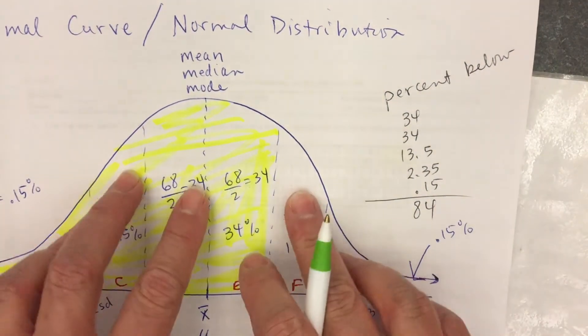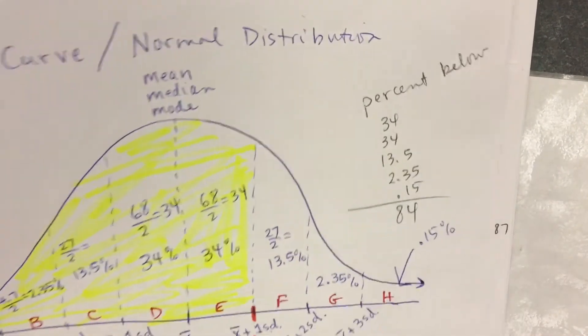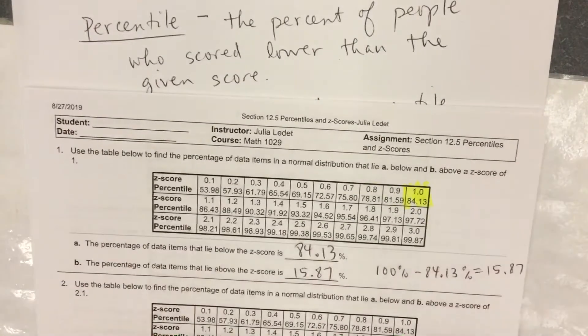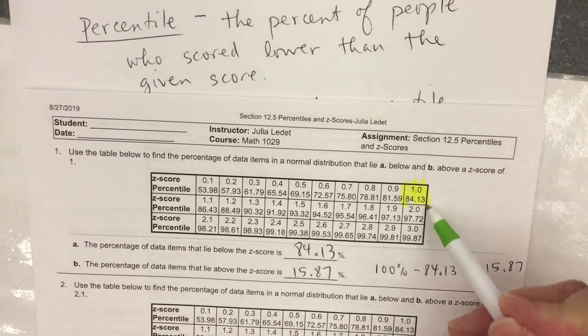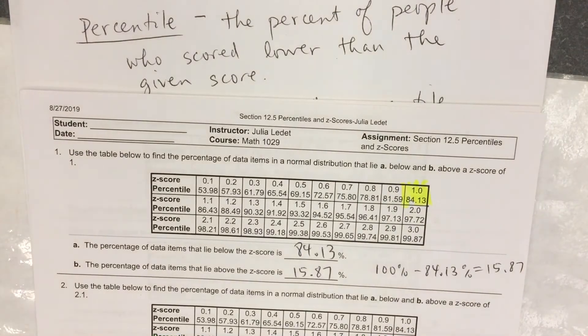Looking at this chart, this graph, this normal curve. Now looking at this chart, it's 84.13%. So it's a bit more accurate on the percentile table.